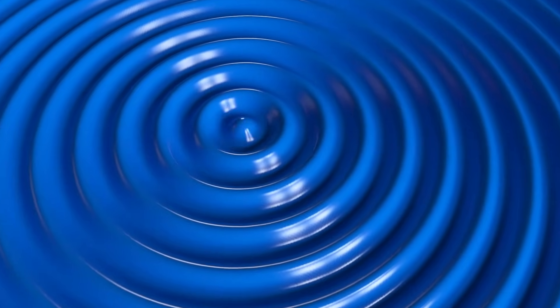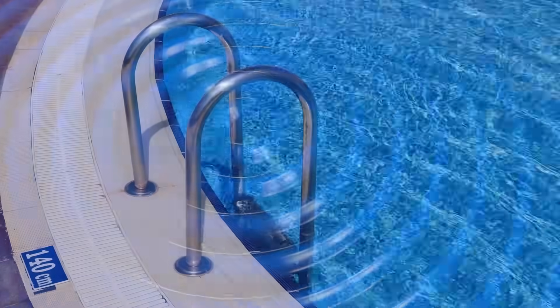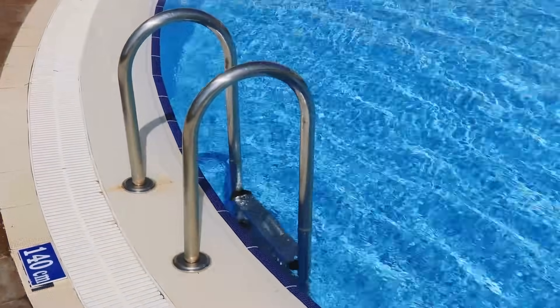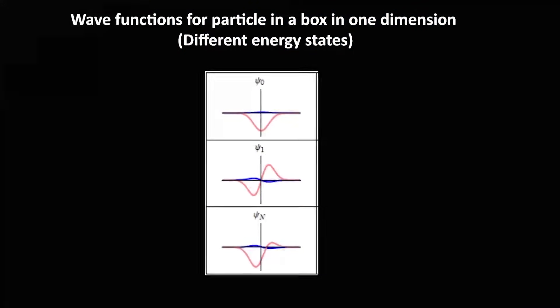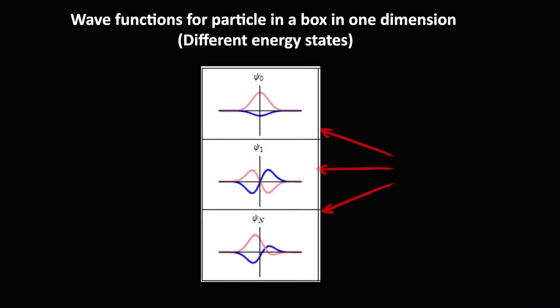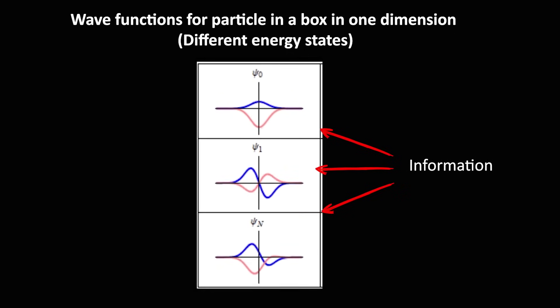If we plot out a typical wave function for a particle, it looks a bit like a wave. But a wave of what? For example, a water wave is made of water molecules. But a wave function for a quantum object isn't really made of any substance other than the information about the object.